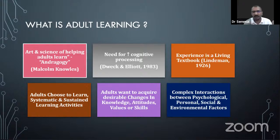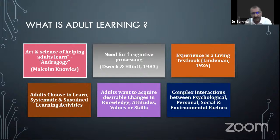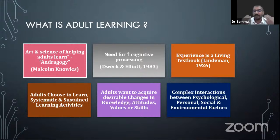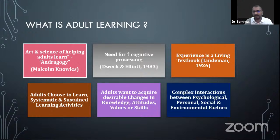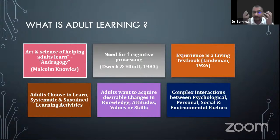Adults need cognitive processing. Experience is a living textbook — so many things a doctor learns from experience. A patient who dies in front of your hands is the greatest textbook. For example, if you lose a patient in surgery, you learn the real surgery and will never make that mistake again. As you gain more experience, you read bigger books. Life is a textbook.